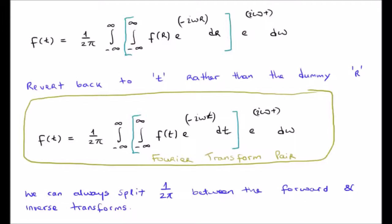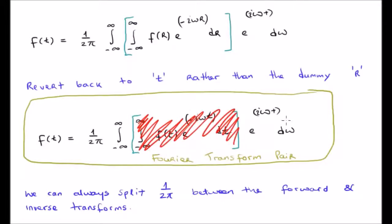The reason it's called a Fourier transform pair is that this expression contains both the forward and inverse Fourier transforms, and the forward and inverse transforms are known as transform pairs. Looking at the integral bracketed in blue — we have something integrated dω giving us a function of t, so that integral must be the inverse Fourier transform, while the inner integral is the forward Fourier transform.